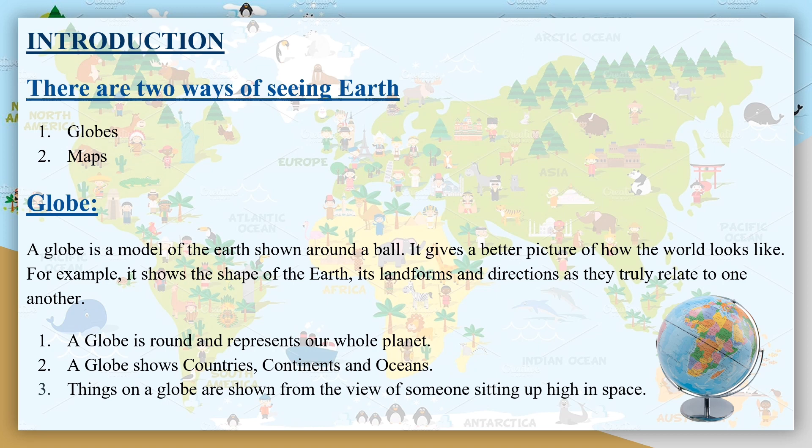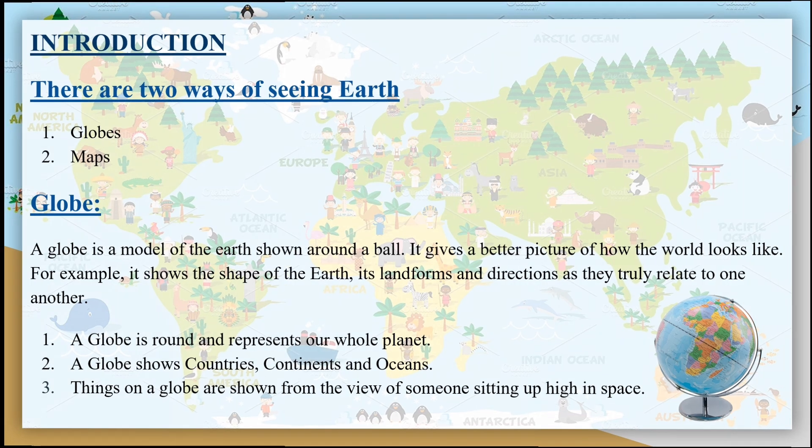Things on the globe are shown from the view of someone sitting up high in space. It's just so simple. The globe is the shape of the earth.